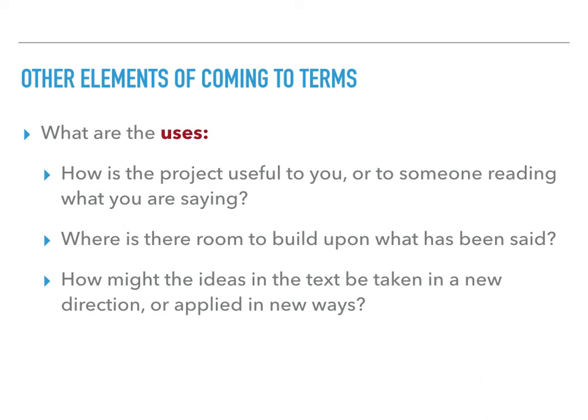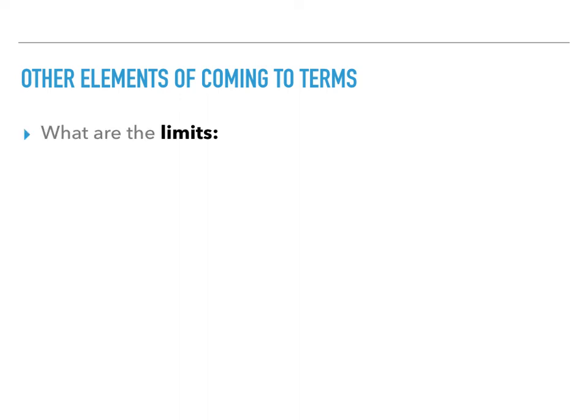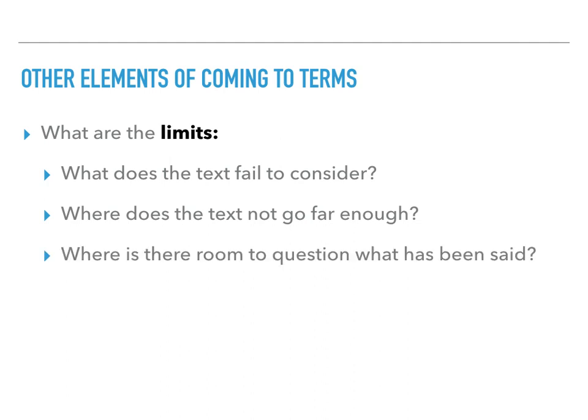Another way of thinking about uses is: how can you apply this text in a particular way? The flip side of uses is limits. There are three basic questions: what doesn't a text consider, where could it have gone further than it did, and where could someone question what has been said? Now these limits don't always have to be negative — not all limits are failings of a text. Harris himself described some of his own limits, explaining that his book is not a guide to research and he's not going to explain the nitty gritty details of how to cite. Sometimes authors just don't have room to discuss all the things they might want to, or they might be limited to a particular time period or geography. But the great thing about limits, whether positive or negative, is that they offer places for someone to add something.